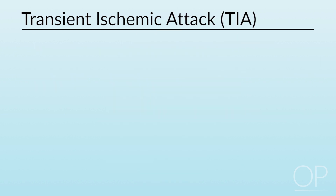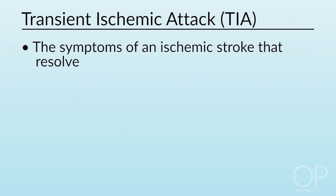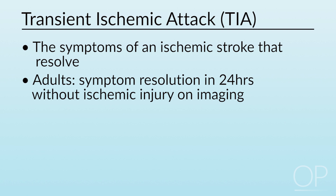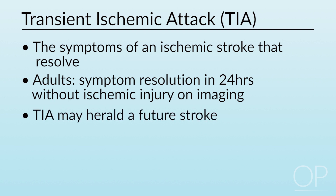Transient ischemic attack, or TIA, is defined as the symptoms of an ischemic stroke that resolve. In adults, this has been defined as symptom resolution within 24 hours without ischemic injury being apparent on imaging. We now know that TIA can also occur in children. TIA is important because it often heralds a future stroke, and therefore a complete workup is warranted.